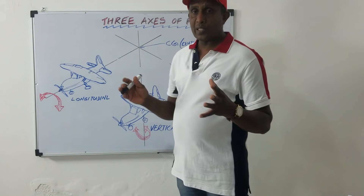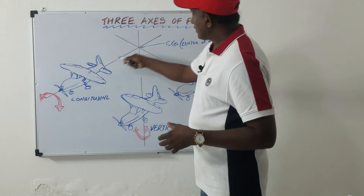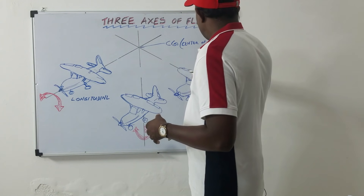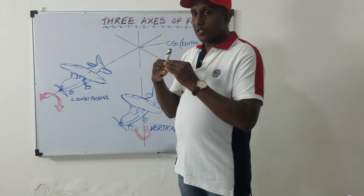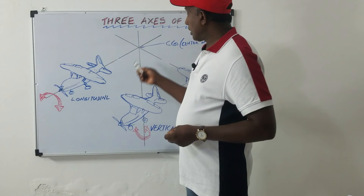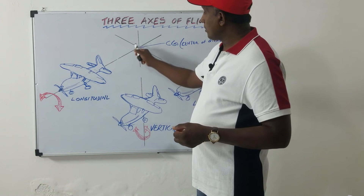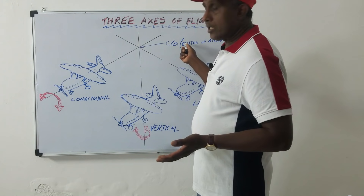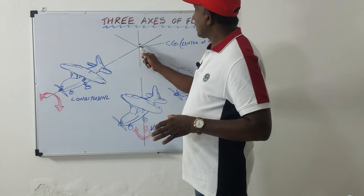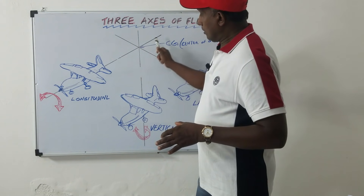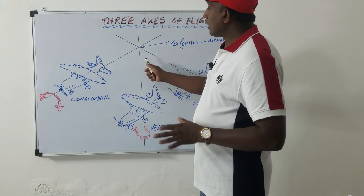Now you know what the three axes of flight are. This is the vertical axis. This is the longitudinal axis. This is the lateral axis. And this is the CG — center of gravity of the airplane. All aircraft weight acts on the CG downward. Depending on CG movement, the aircraft is controlled by the control surfaces. The CG is not a permanent point; it moves as per the control movement.